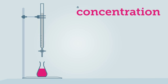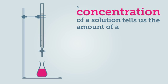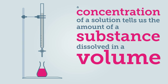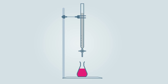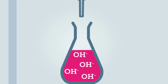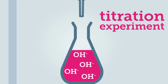A concentration of a solution tells us the amount of a substance dissolved in a volume. It is measured in moles per cubic decimetre. We can determine the concentration of hydrogen ions in an acid solution by performing a titration experiment.